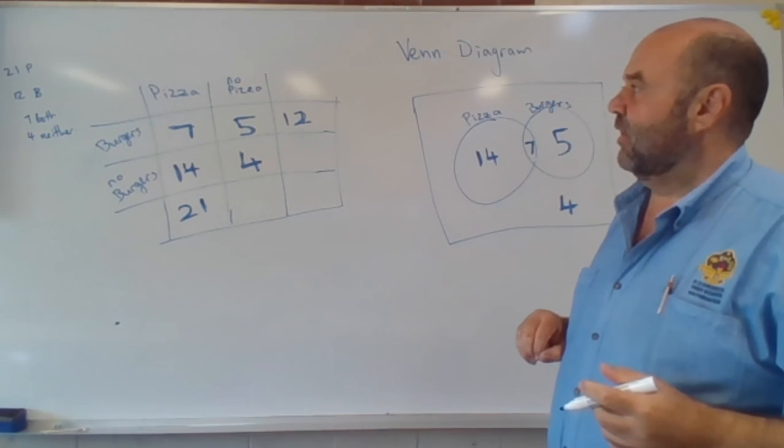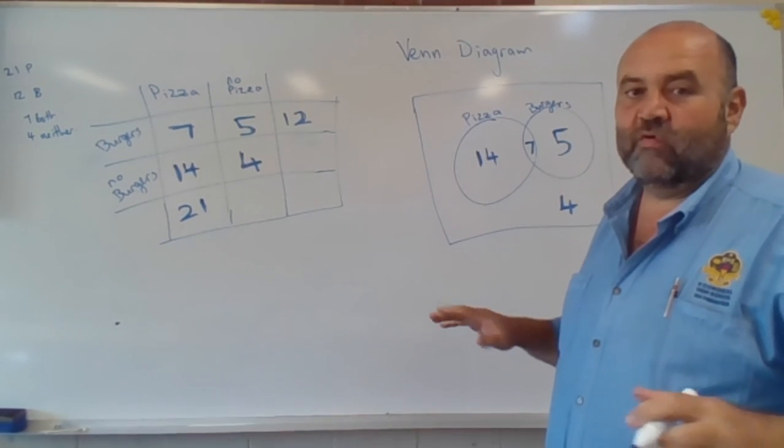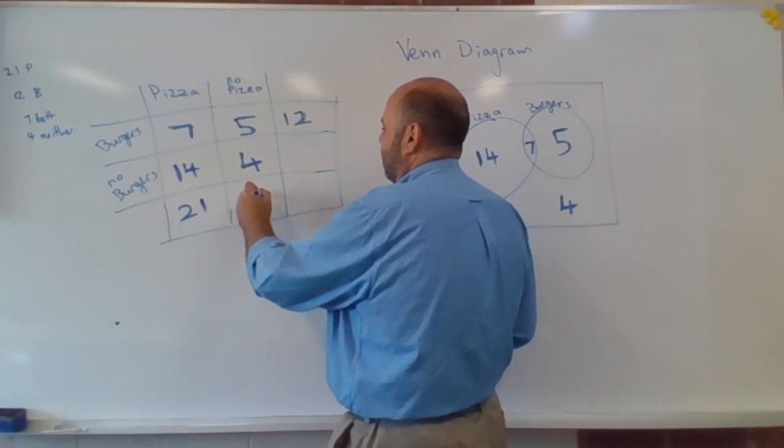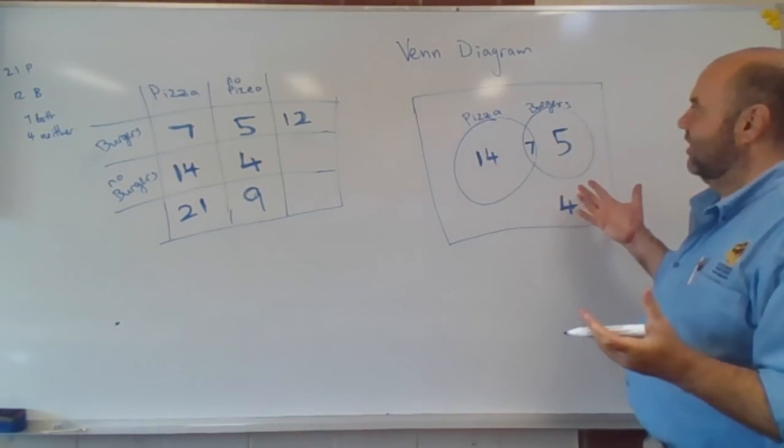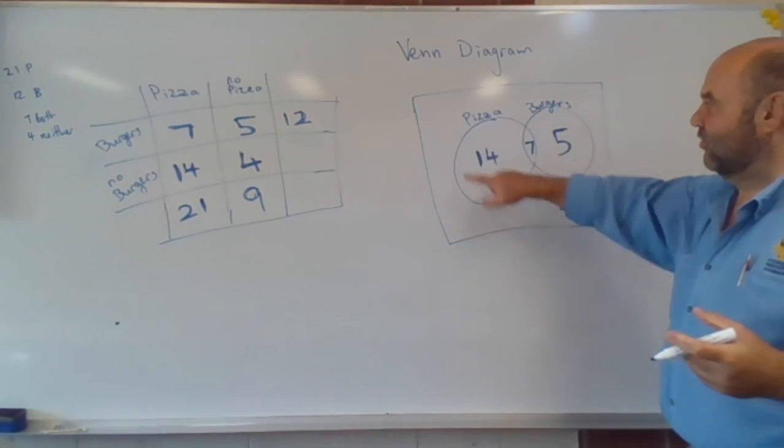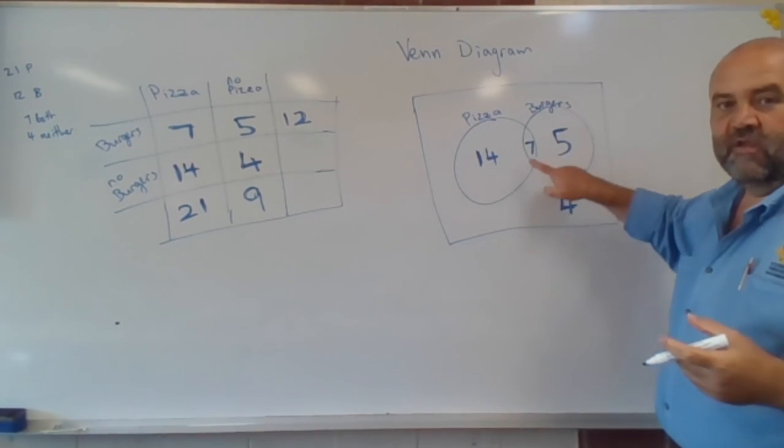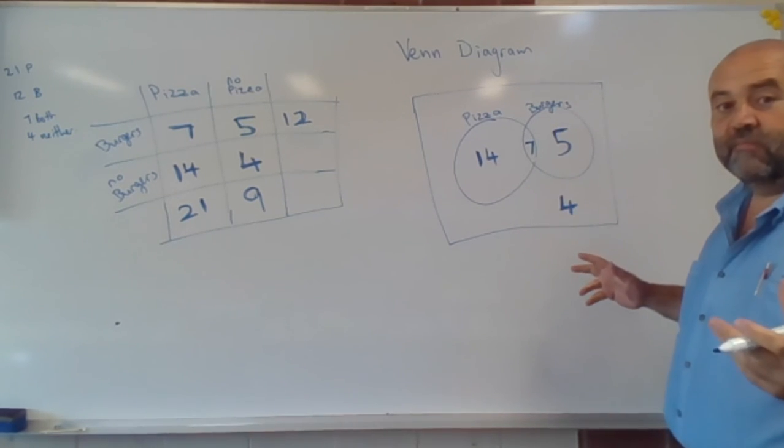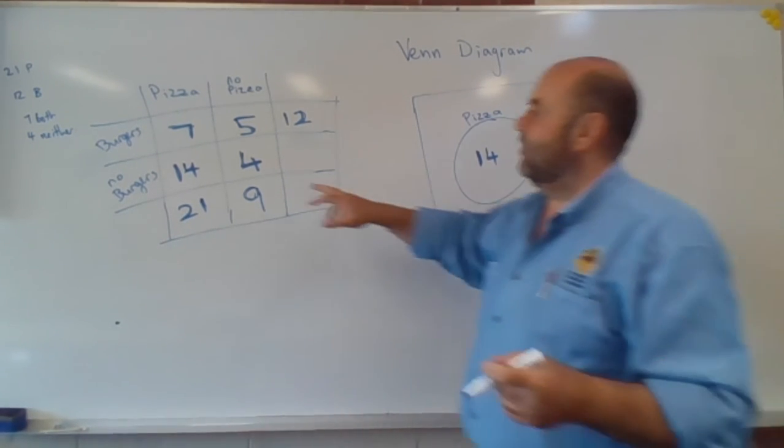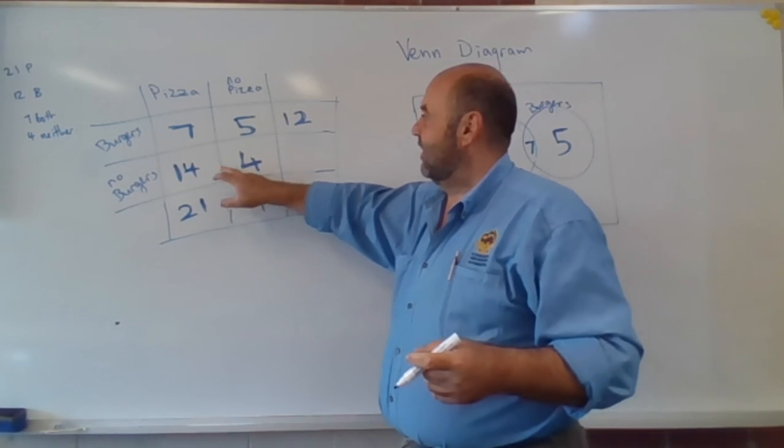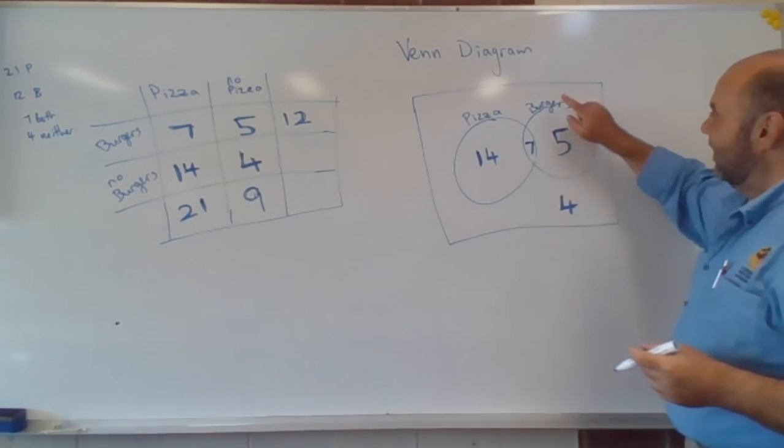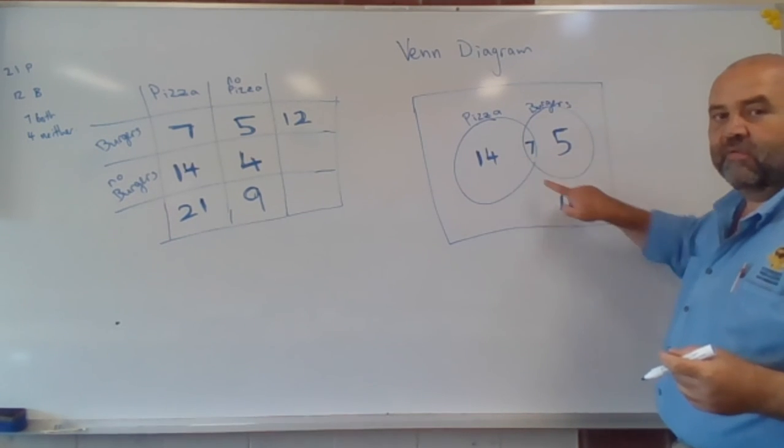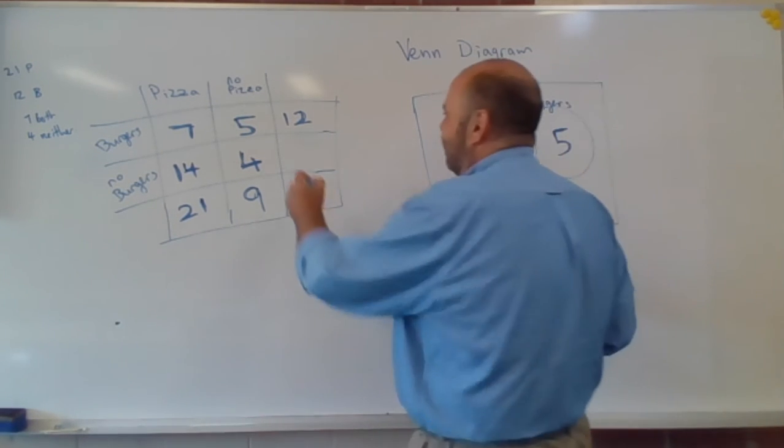People who did not like pizza at all, well, they add up to nine. Now, where's that number nine over here? Well, if you do not like pizza, so you're outside of this circle. Outside of this circle is that five and that four, that's nine people. Over here, do not like burgers at all. So if you don't like a burger, you're outside of this circle. So that's those 14 people and those four people, that's 18 people.